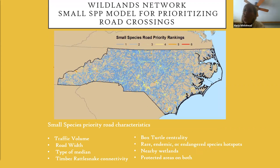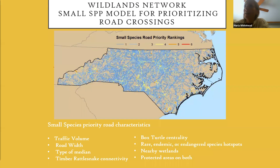In the small species model, many of the same factors were examined—traffic volume, road width, and type of median. This model also incorporated timber rattlesnake connectivity (top 10% flow), a box turtle centrality model, rare/endemic/endangered species hotspots, nearby wetlands as a good predictor for small species movement, and protected lands on both sides of the road.